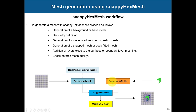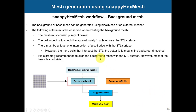Regarding data structure: the geometry is always in constant/triSurface, you generate your background mesh, and in system you find the snappyHexMesh dictionary. For the background mesh, it can be generated using blockMesh or external meshers. The mesh must consist purely of hexes - at least in the region where you have the STL, because the method works by splitting hexes.